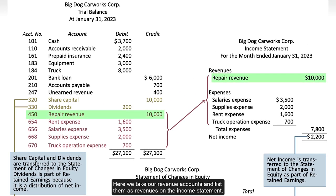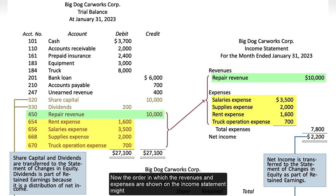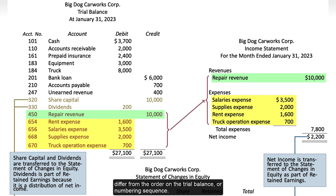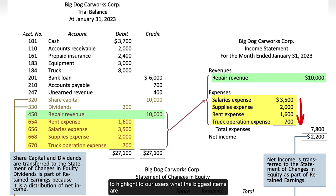Here we take our revenue accounts and list them as revenues on the income statement. For Big Dog, the only revenue is repair revenue. Then we list all the expenses. Now the order in which the revenues and expenses are shown on the income statement might differ from the order on the trial balance or numbering sequence. Often we list revenues and expenses in the order of highest to lowest dollar value to highlight to our users what the biggest items are. Expenses can also be listed in alphabetical order instead.